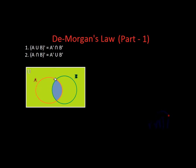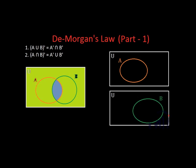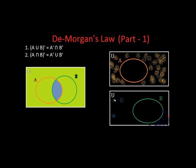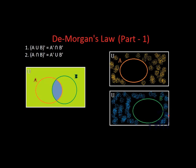The area represented in light green will be the complement of A intersection B. Now for the right side — A complement union B complement — let me draw sets A and B separately. The second rule says the complement of A intersection B is equal to A complement union B complement. The first drawing represents set A and the universal set, so this area represents A complement. The area outside the green circle but inside the universal rectangle represents B complement.